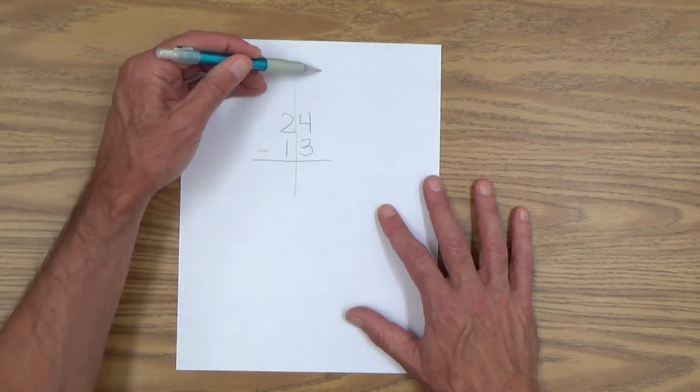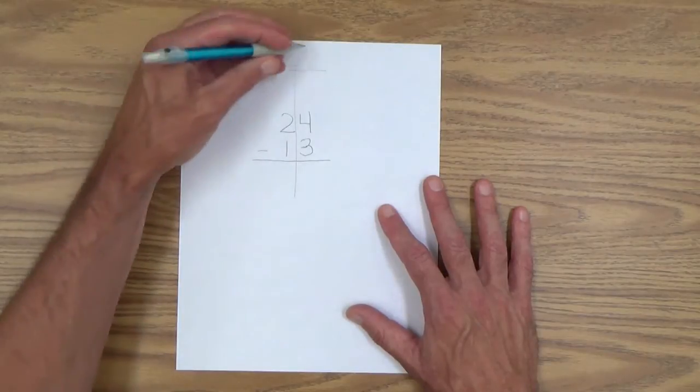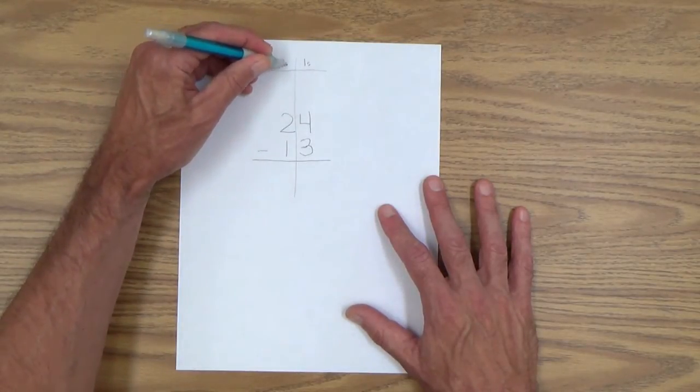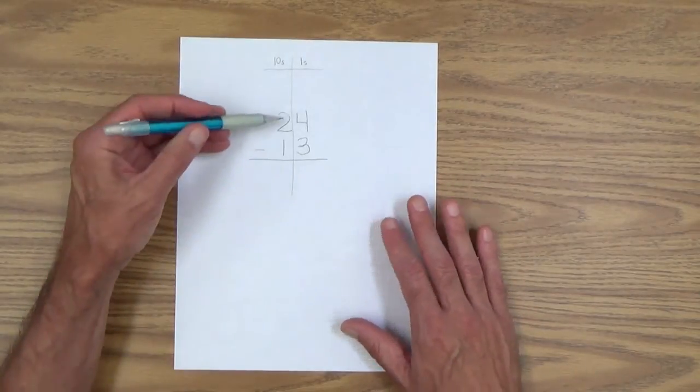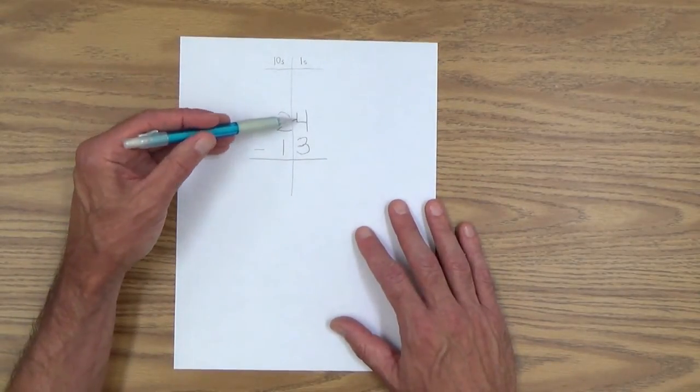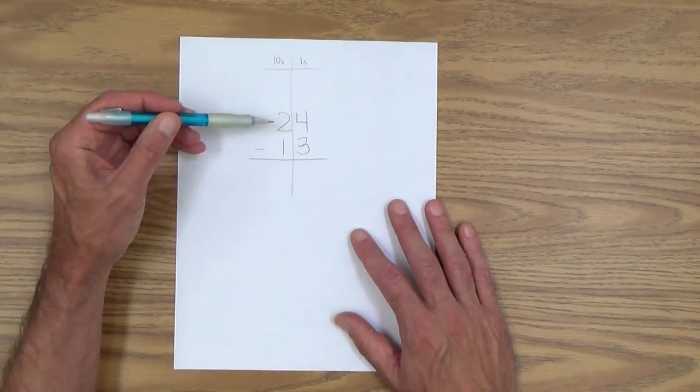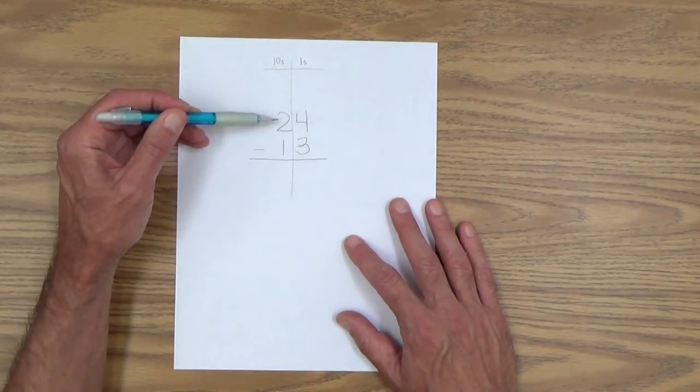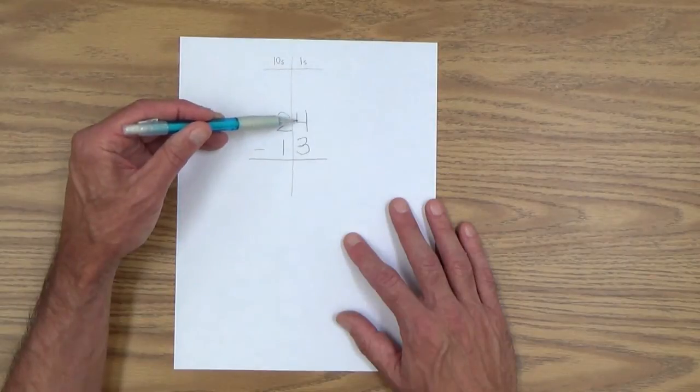Draw a line right through there and say, look, on this side of the line, we have ones. This side, we have tens. And then prove it to her by saying, this number is 24.